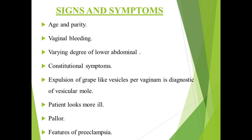Quickening is absent in the complete mole as there are no fetal parts. Features suggesting early months of pregnancy will be present, but the patient will look more ill and paler than can be accounted for, with pallor out of proportion to visible blood loss due to possible concealed hemorrhage. Anemia may be due to iron deficiency or folic acid deficiency. Features of pre-eclampsia — hypertension, edema, and proteinuria — are present in about 50 percent of cases, and convulsions may also occur.